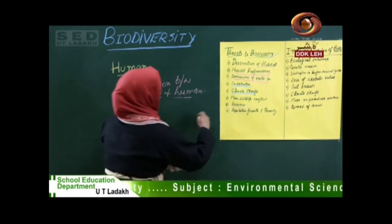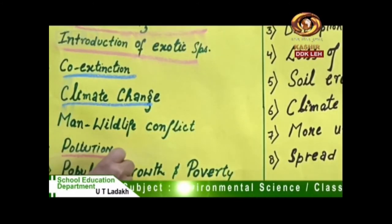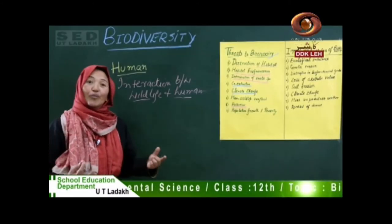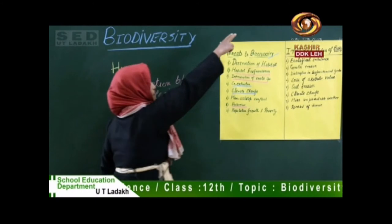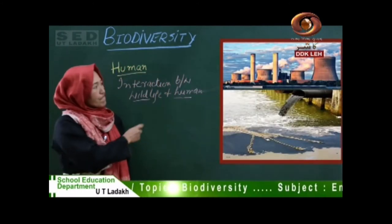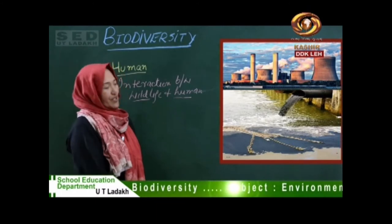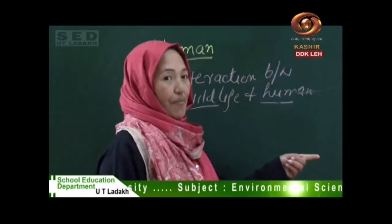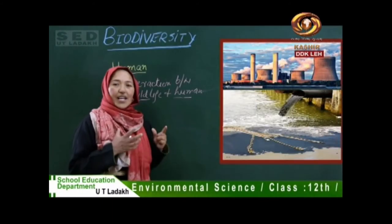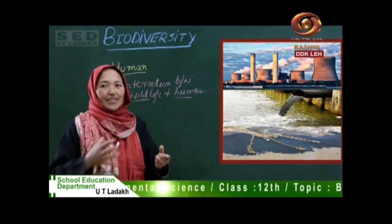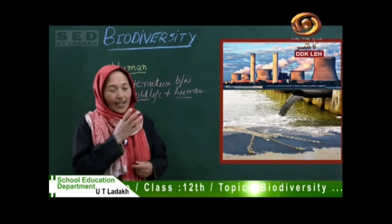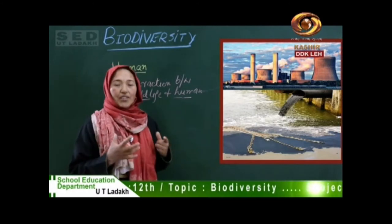The second point is pollution. As we know, pollution creates problems in so many ways. The first is air pollution, the second is water pollution, and the third is oil spill. Air pollution destroys the forest.